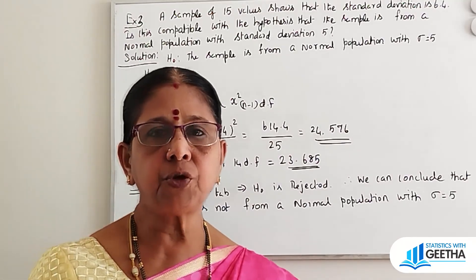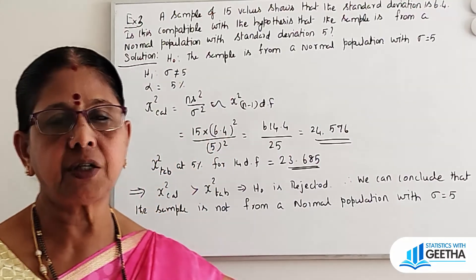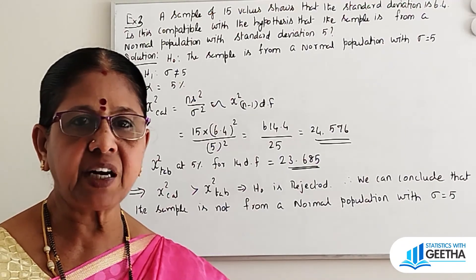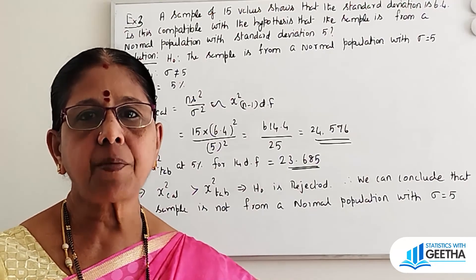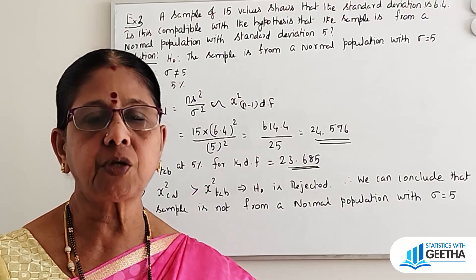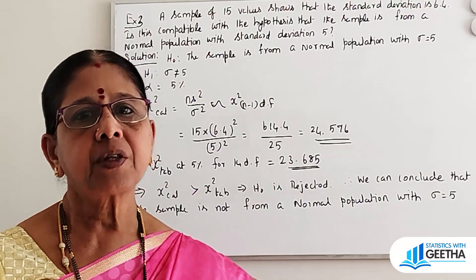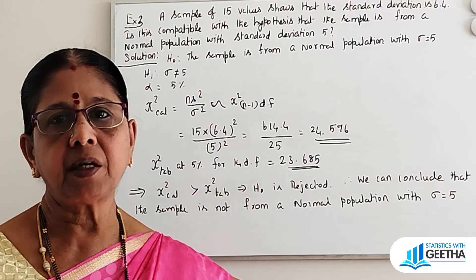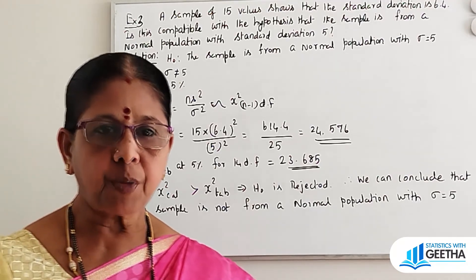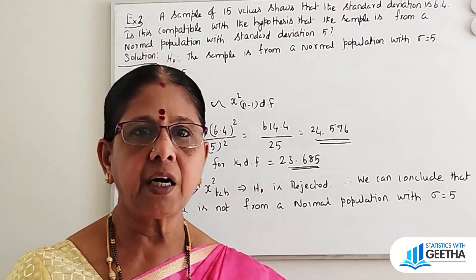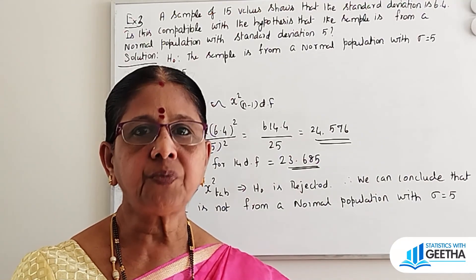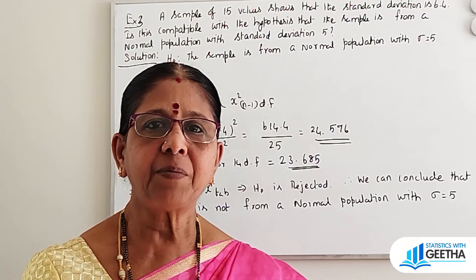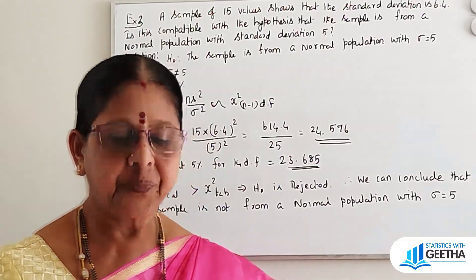So in the chi-square population variance test, we have two types: directly applying chi-square equal to N S square by sigma square for small samples, or when the sample size is large, we use Fischer's approximation and compare with normal table values. Thank you.